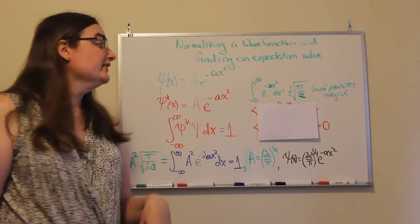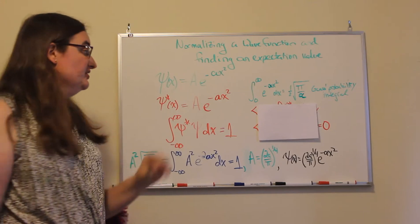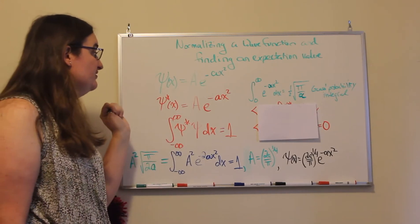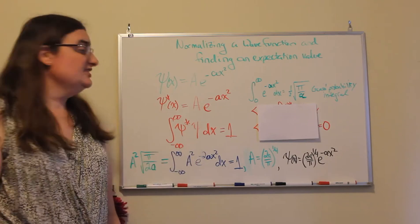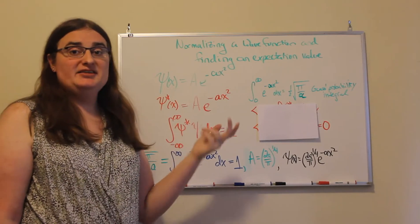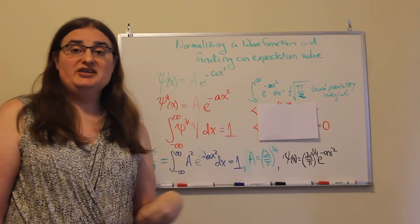So mathematically, if you have a probability wave function, like say psi as a function of position equal to some constant a times Euler's number to the minus a times x squared.